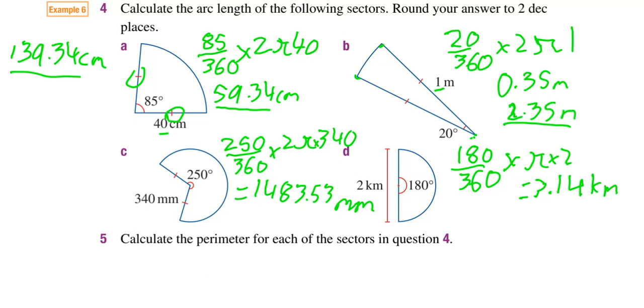For C, we've already got our answer here and we just need to add 340 twice which is 680. You add 680 to your value that you've got there and you'll end up getting 2,163.53.